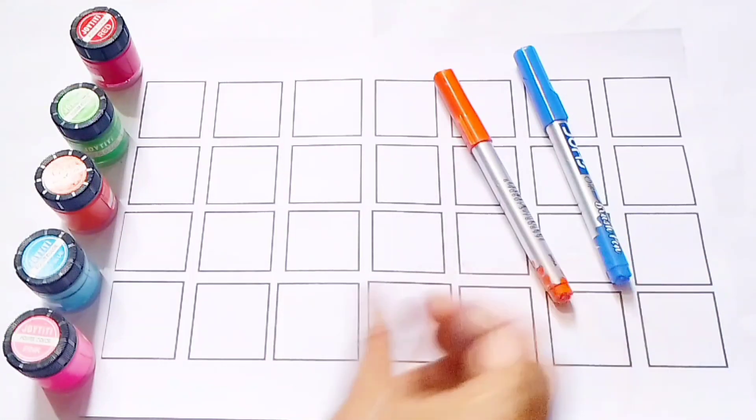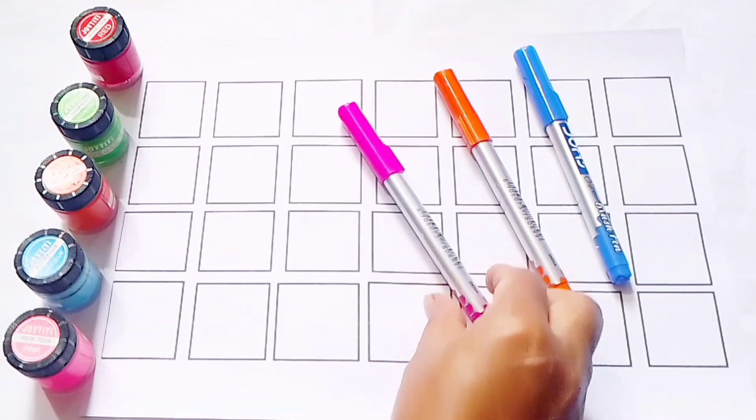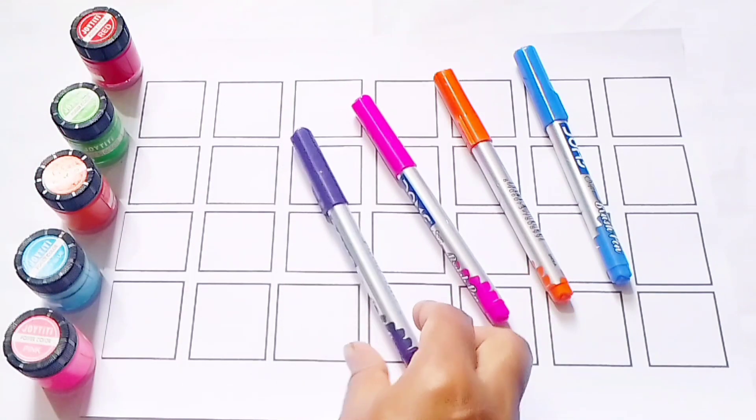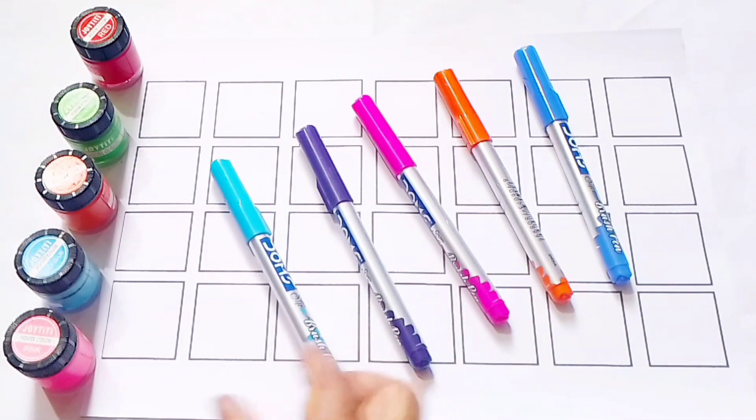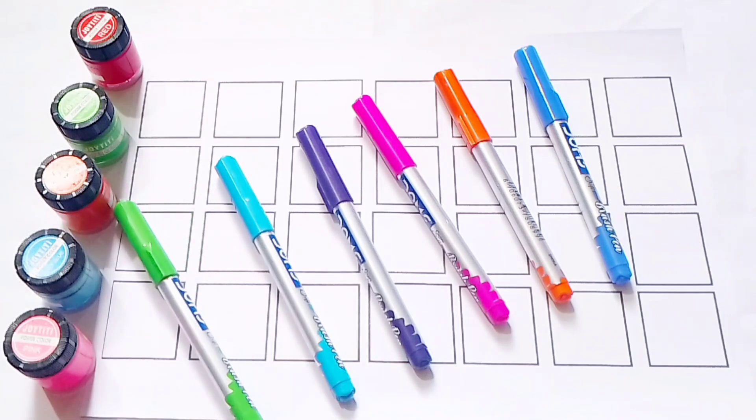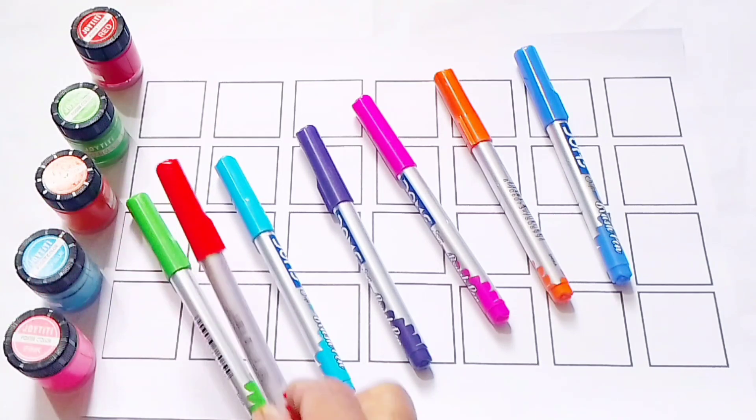Colors name: blue color, orange color, pink color, purple color, sky blue color, green color, red color.